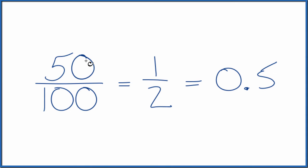Another way to do it is to divide fifty by one hundred on your calculator, or do it longhand. When you do that, you're going to end up with zero point five, or you might get zero point five zero. Those are equivalent.